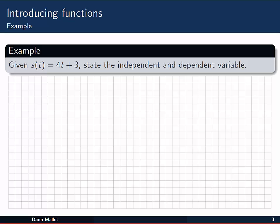Here's an example of a mathematical function. Given s of t—that's how we say that symbol there, s of t—s is a function of t. Given that that's equal to 4t plus 3, what are the independent and dependent variables?